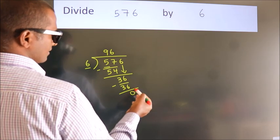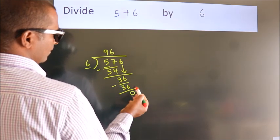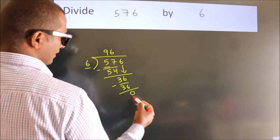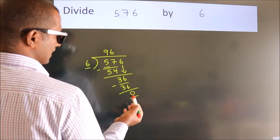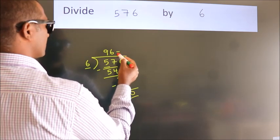After this, no more numbers to bring down. And we got remainder 0. So this is our quotient.